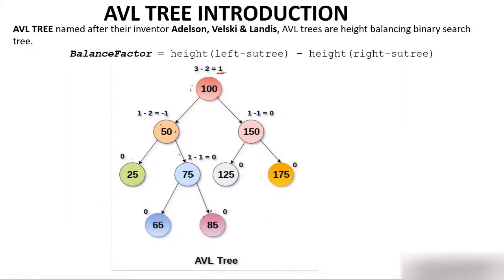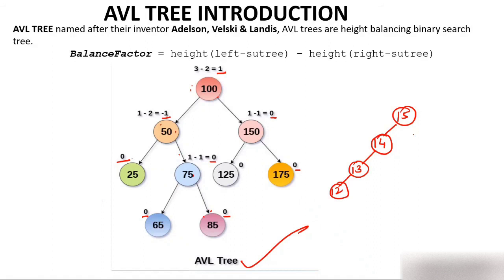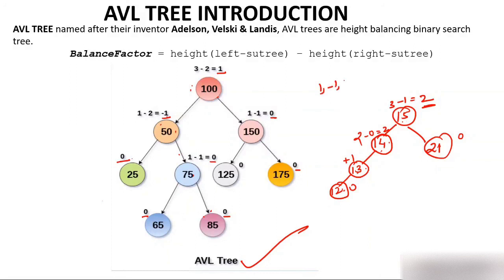Now if you see the balance factor of every node in that tree — every node has balance factor either 0, 1, or -1 — so that tree is an AVL tree. Now suppose we have another example: 15 at root, 20 on the right, 14 on the left, then 13 and 12 further left, and 21 on the right. Is this tree an AVL tree? Calculate the balance factor of the root: left height is 3 (0, 1, 2, 3) and right height is 1, so balance factor = 3 minus 1 = 2. For node 14, left height is 2 and right height is 0, so balance factor = 2. Since multiple nodes have balance factor 2, which is not 0, 1, or -1, this tree is not an AVL tree.